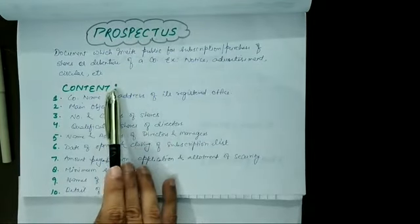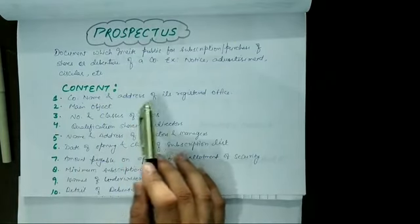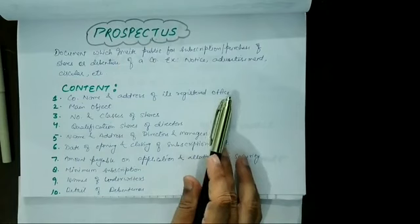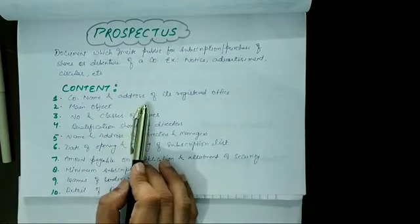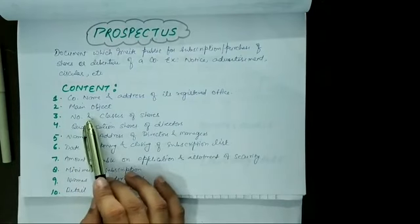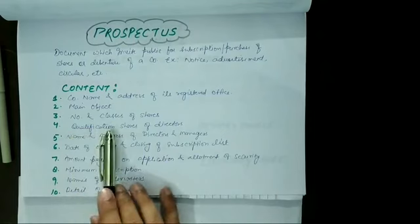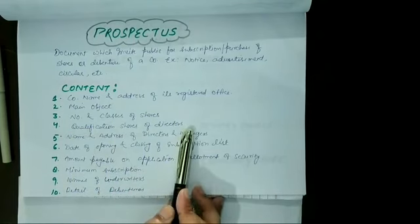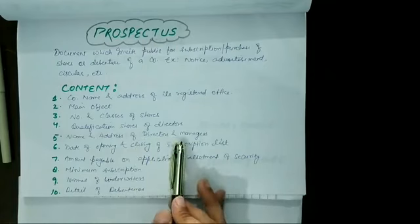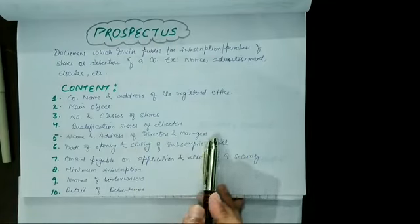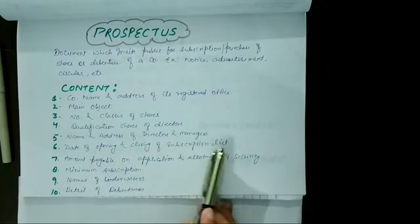Now the contents of Prospectus. The very first is Company Name and Address of a registered office. The second one is Main Object of the Company. Next is Number and Classes of Shares. Next one is Qualification Shares of Directors. Next one is Name and Address of Directors and Managers. Next, Date of Opening and Closing of Subscription List.